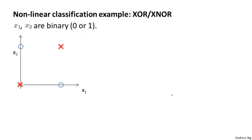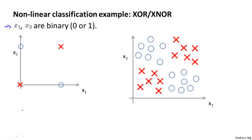Consider the following problem where we have input features x1 and x2 that are binary values, so either 0 or 1. In this example, I've drawn only two positive examples and two negative examples, but you can think of this as a simplified version of a more complex learning problem where we may have a bunch of positive examples to the upper right and the lower left, and a bunch of negative examples denoted by the circles. And what we'd like to do is learn a nonlinear decision boundary that maybe separates the positive and the negative examples.